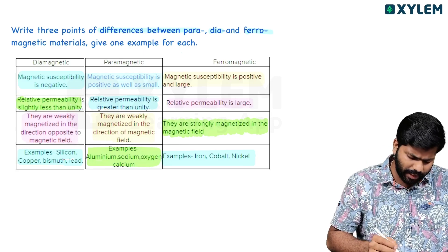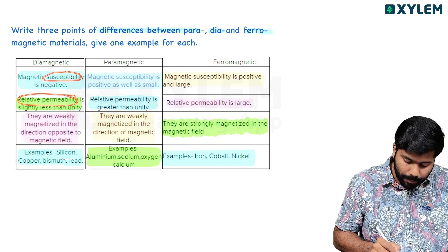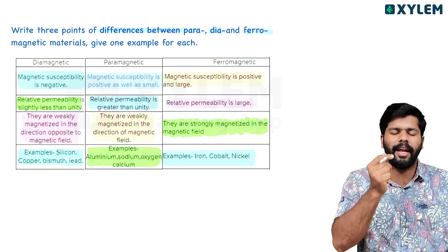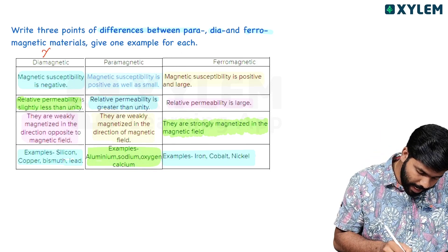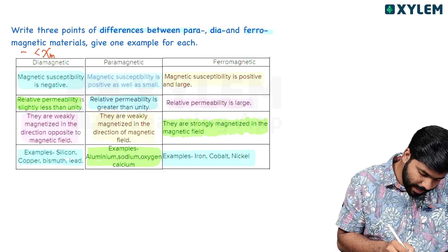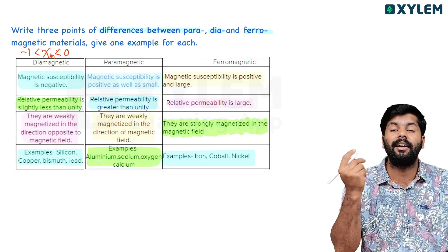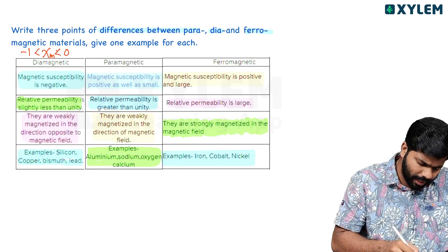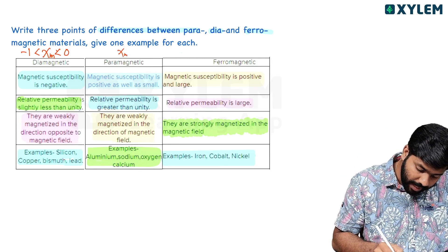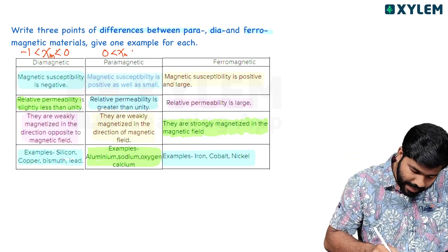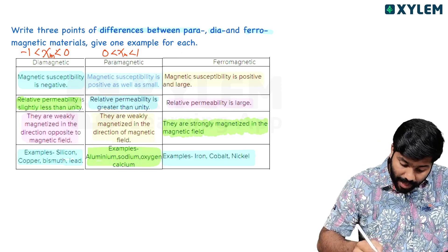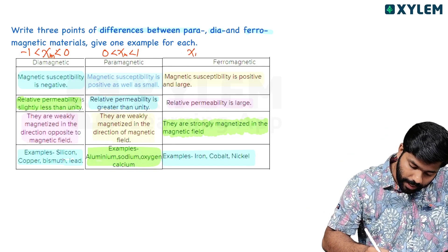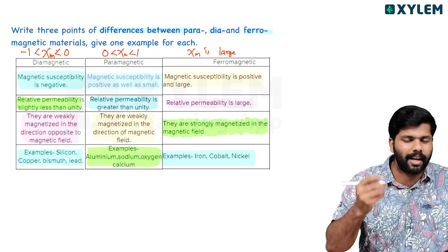The next important item is susceptibility. For diamagnetic materials, susceptibility χm is small and negative — χm is between -1 and 0. For paramagnetic materials, susceptibility is small and positive, meaning χm is greater than 0 and less than 1. For ferromagnetic materials, susceptibility is very large — they can be easily magnetized, so χm is a large positive value.